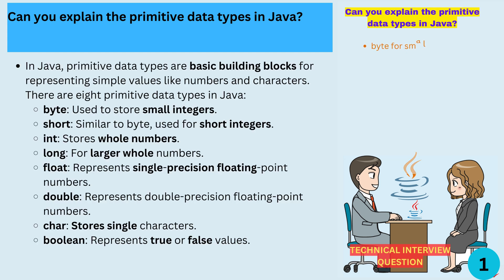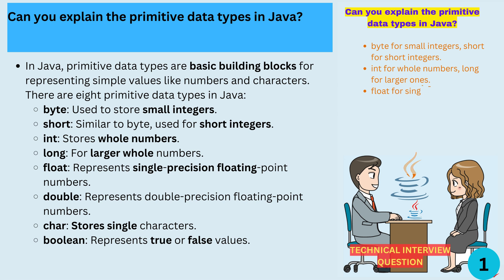Can you explain the primitive data types in Java? In Java, primitive data types are basic building blocks for representing simple values like numbers and characters. There are eight primitive data types in Java.